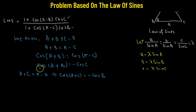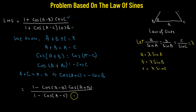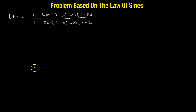After substitution, the left-hand side becomes: 1 minus cos(A − B) multiplied by cos(A + B), divided by 1 minus cos(A − C) multiplied by cos(A + C). We will now apply a trigonometric manipulation to simplify cos(A − B)·cos(A + B).